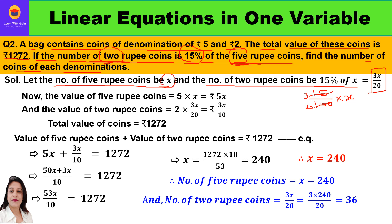The value of 5-rupee coins is denomination multiplied by number, which gives the value. The denomination is 5 and the number is x, so the total value of 5-rupee coins is 5x. The value of 2-rupee coins is the denomination — which is 2 — multiplied by the number 3x by 20. Simplifying, 2 and 20 cancel to give 10, so the value of 2-rupee coins is 3x by 10.